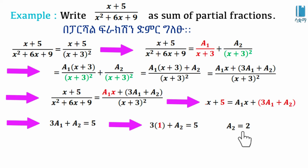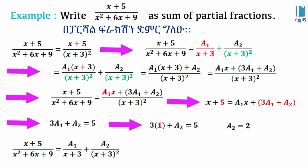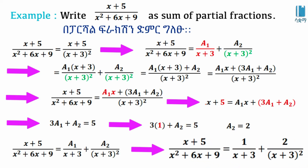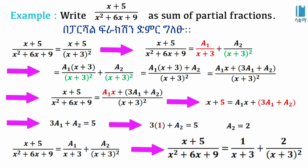Now, substituting the A1 value, we find A2. So the final result is: x plus 5 over x squared plus 6x plus 9 equals A1 over x plus 3, plus A2 over x plus 3 squared, with A1 and A2 now determined by substitution.